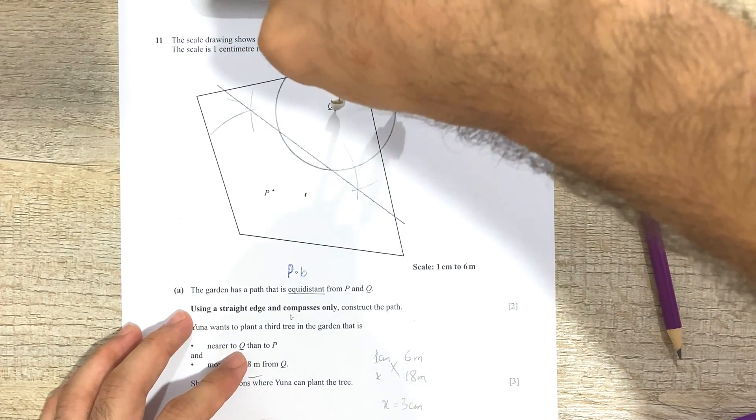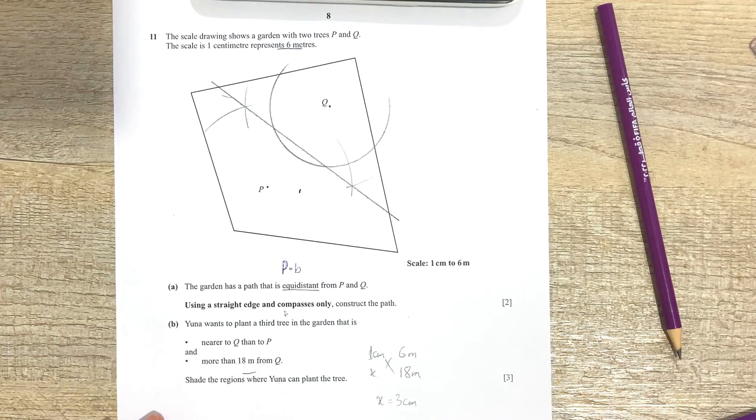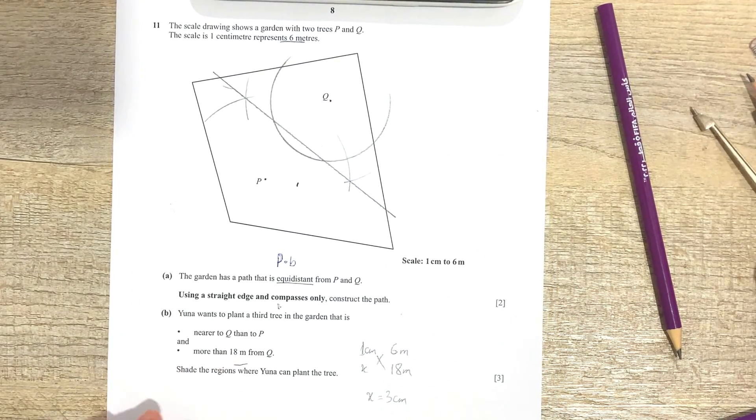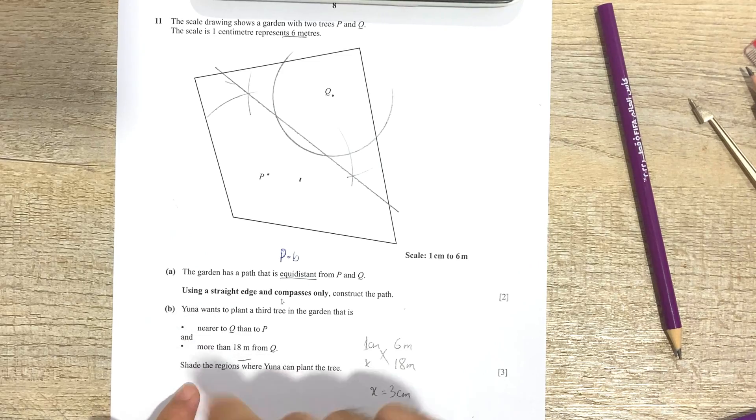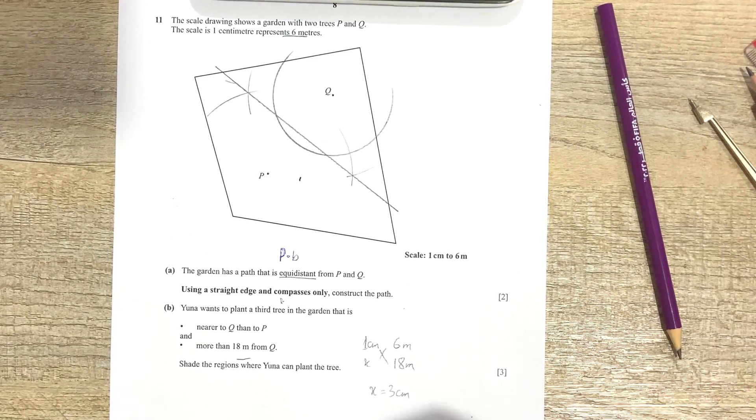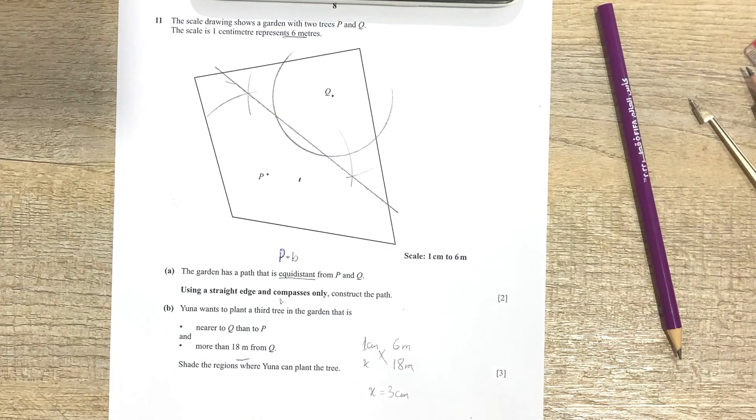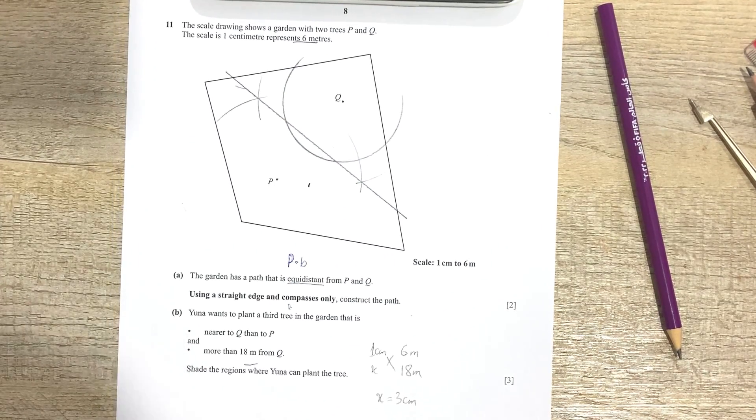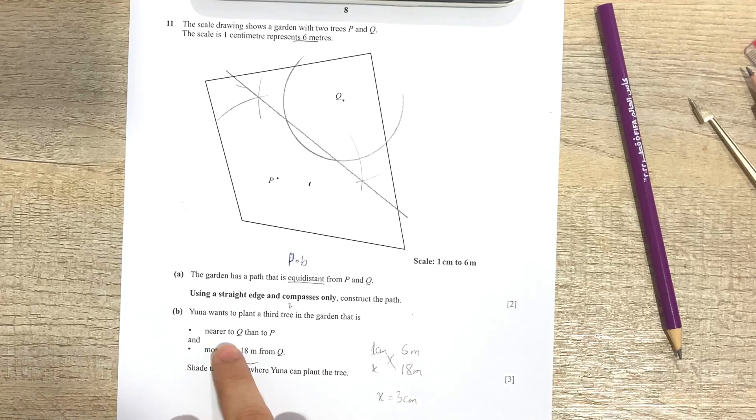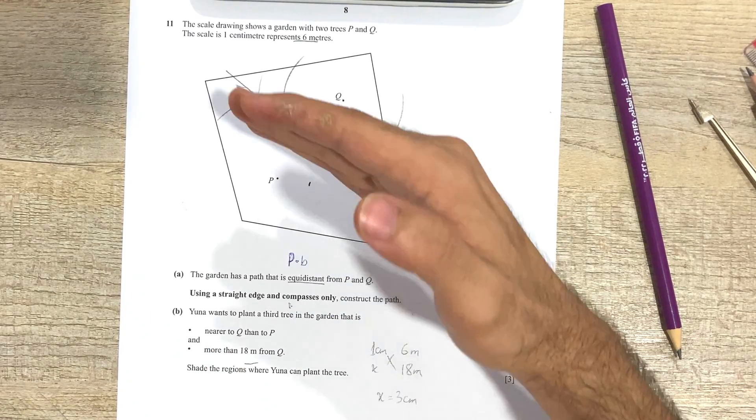Okay, now this is the region. This is what is now going to help us decide where exactly she's going to plant the third tree. So the shading part I'm going to do it with a pen so that it's clear for you guys to see. Okay, and I apologize for the bad lighting, but you know, it is what it is.